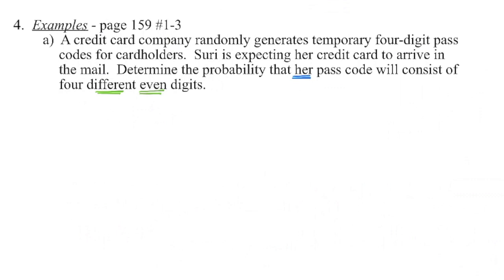We're going to look at three examples from your textbook. In the first, a credit card company randomly generates temporary four-digit passcodes for cardholders. When we did password-type questions before, we drew out the spaces and determined how many possibilities there are at each stage. It's a fundamental counting principle type of question.